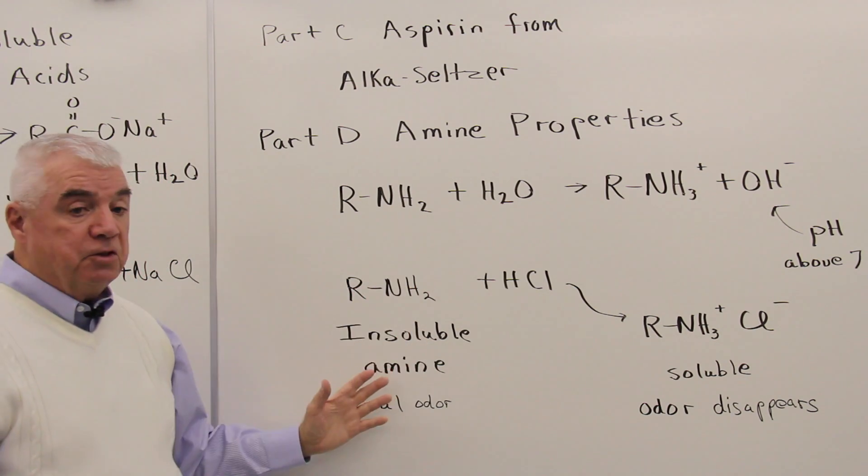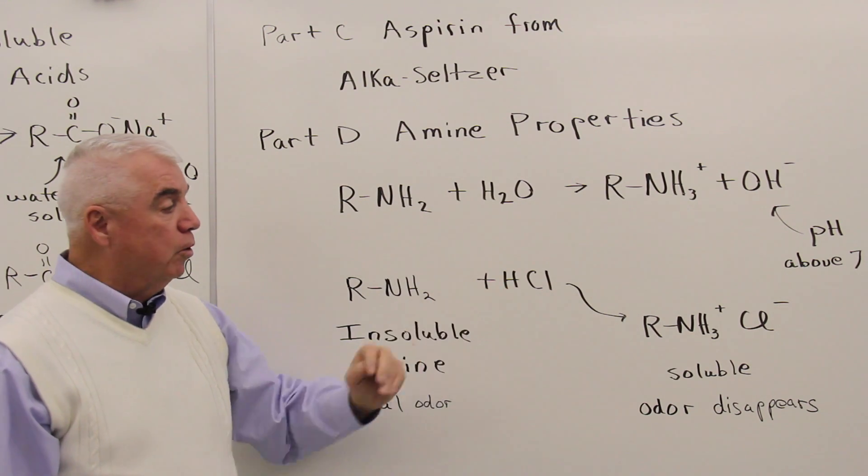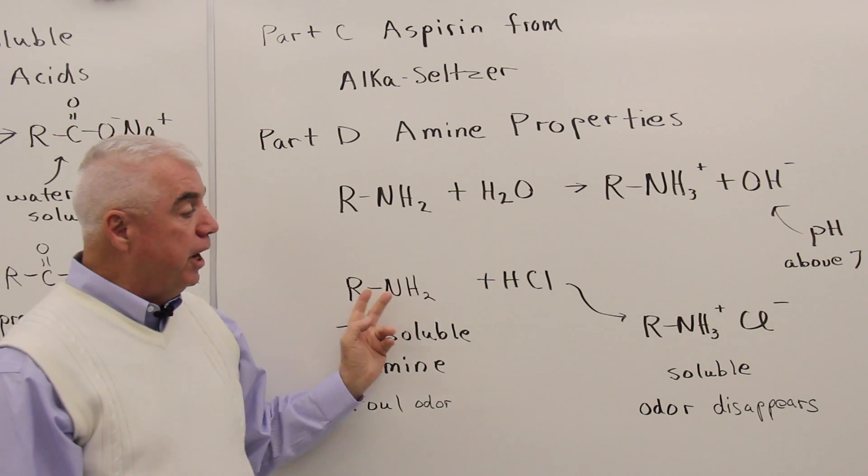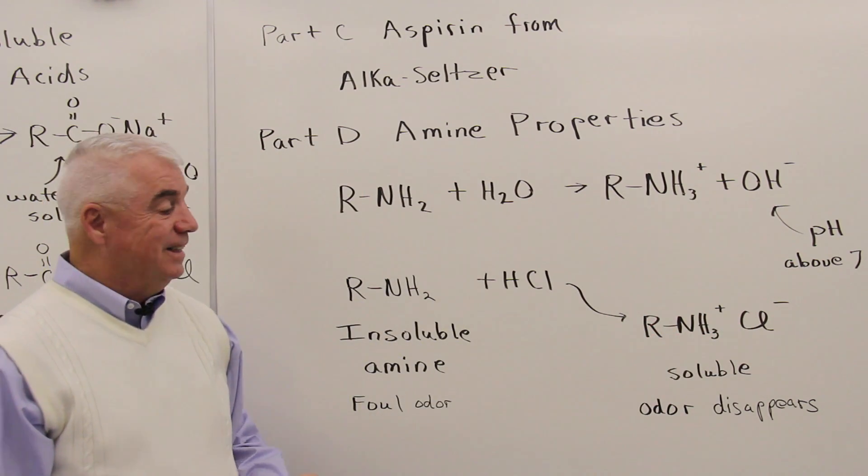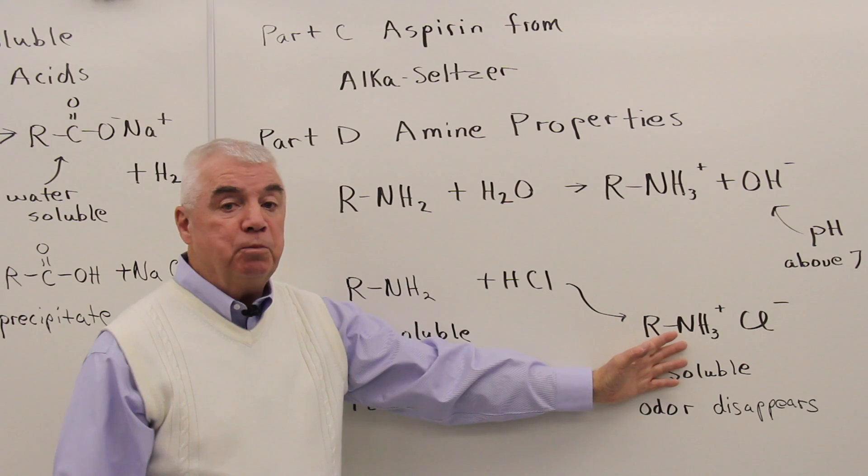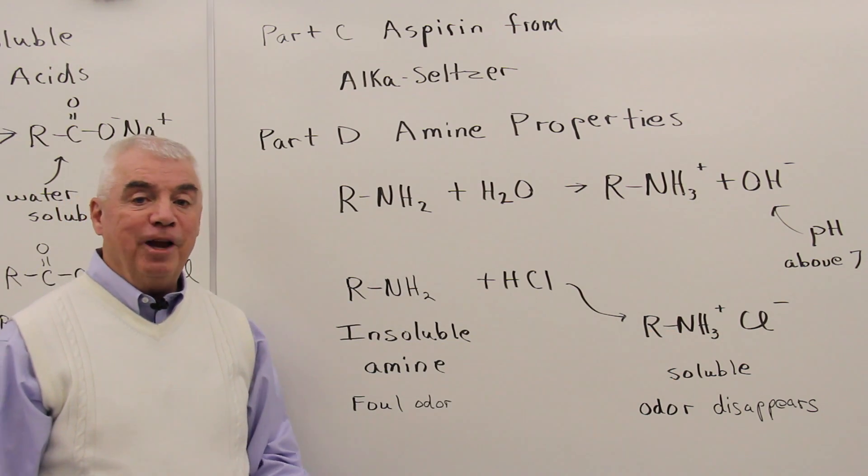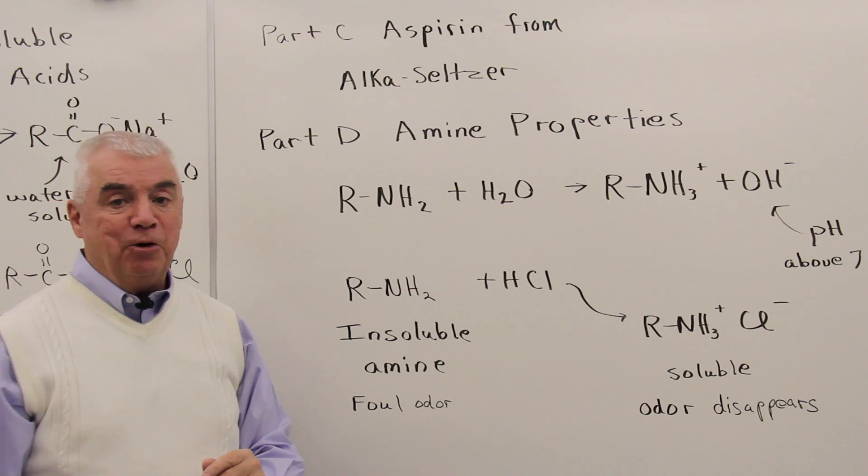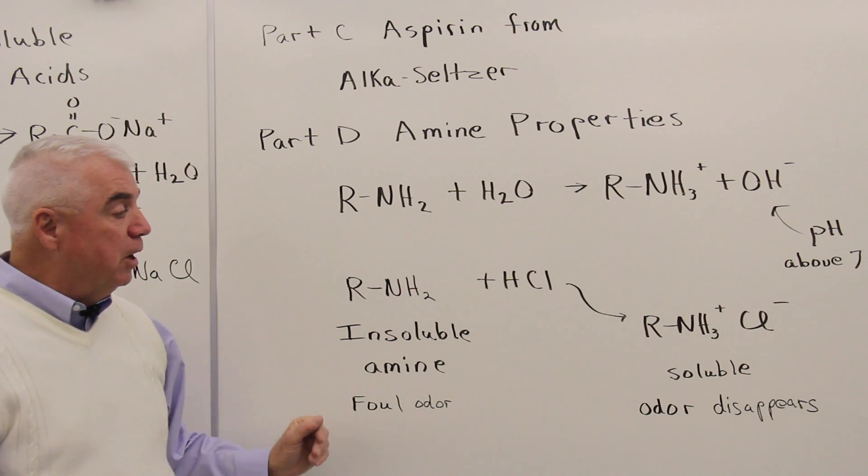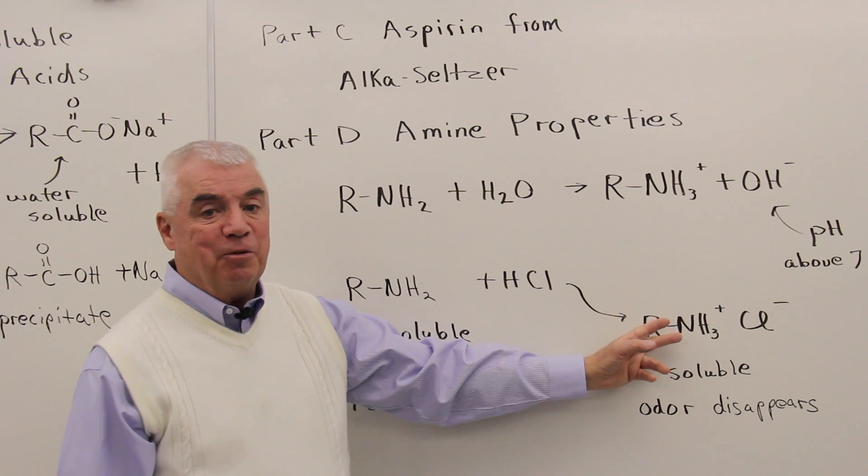An insoluble amine can react with hydrochloric acid, and again the nitrogen is protonated. We have an ionic compound as the product. That means that it's going to be much more soluble. It'll go into solution. And one other nice fact about this process, amines typically have foul odors, but if you get them to go into solution, the odor disappears.